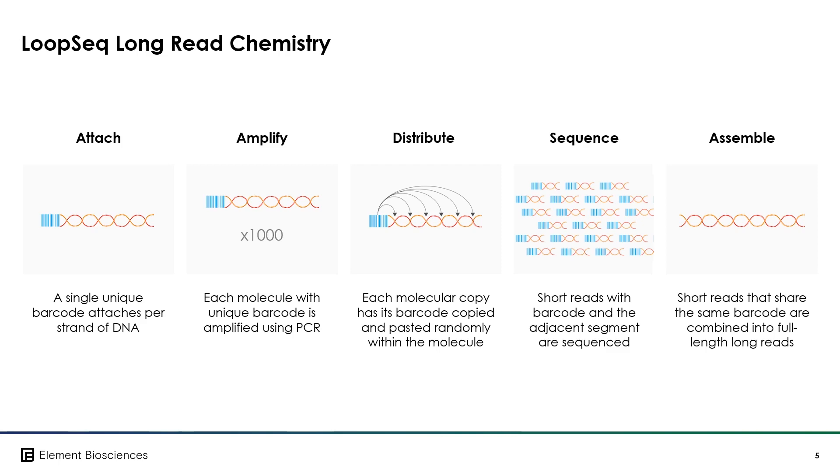During the final step, Assemble, the UMI-binned short reads are used as input to a de novo assembler to recreate the long molecule. This is similar to the methodology used for genome assembly. The final outputs are highly accurate FASTQ files of all the single long reads associated with the sample.